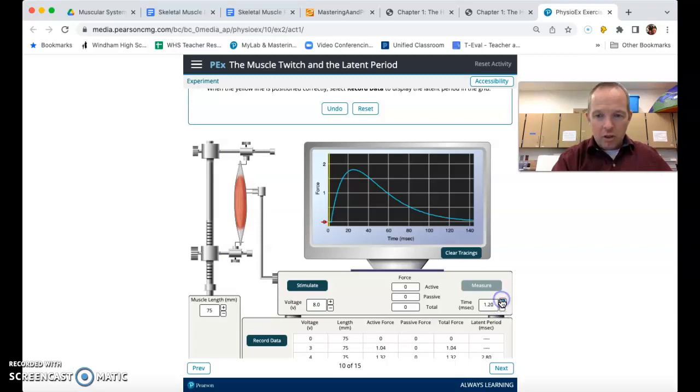And then we can see here, and you can sort of see from the graph that, again, that latent period is still 2.8 milliseconds. So the duration of the latent period doesn't change. It still takes the same amount of time for all these events to occur to get the muscle ready to contract, to get the sarcomere ready to shorten as it does.